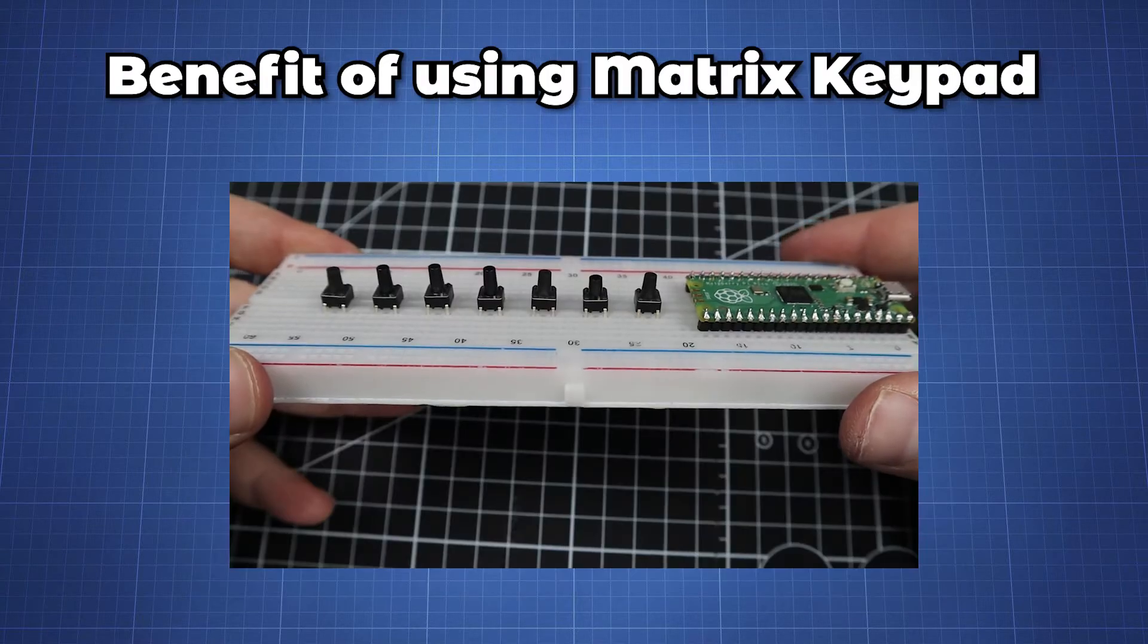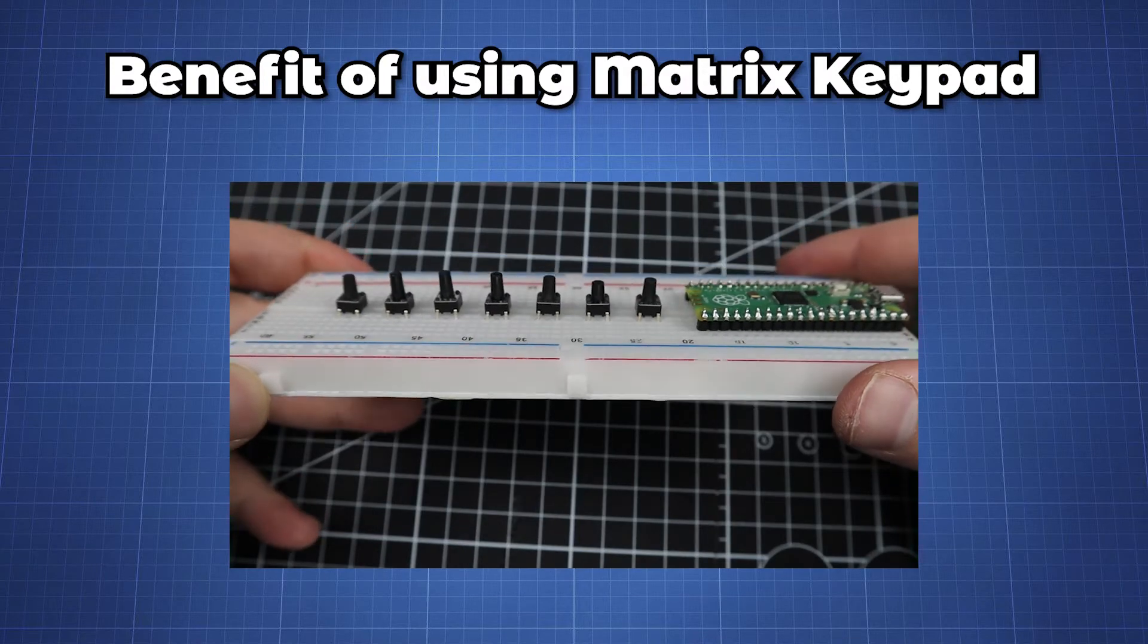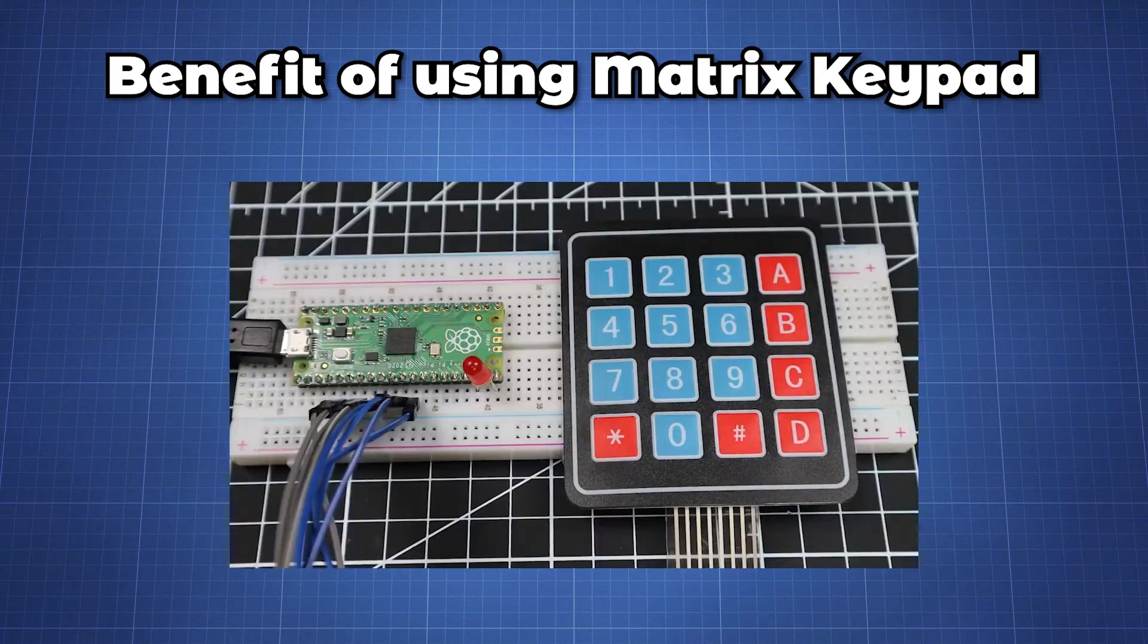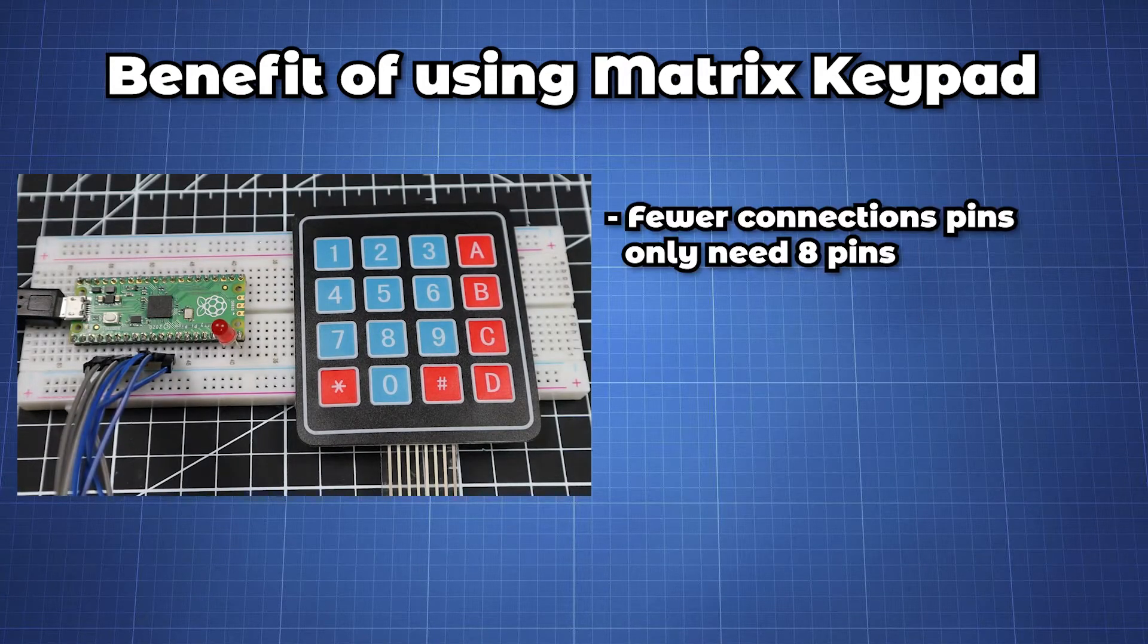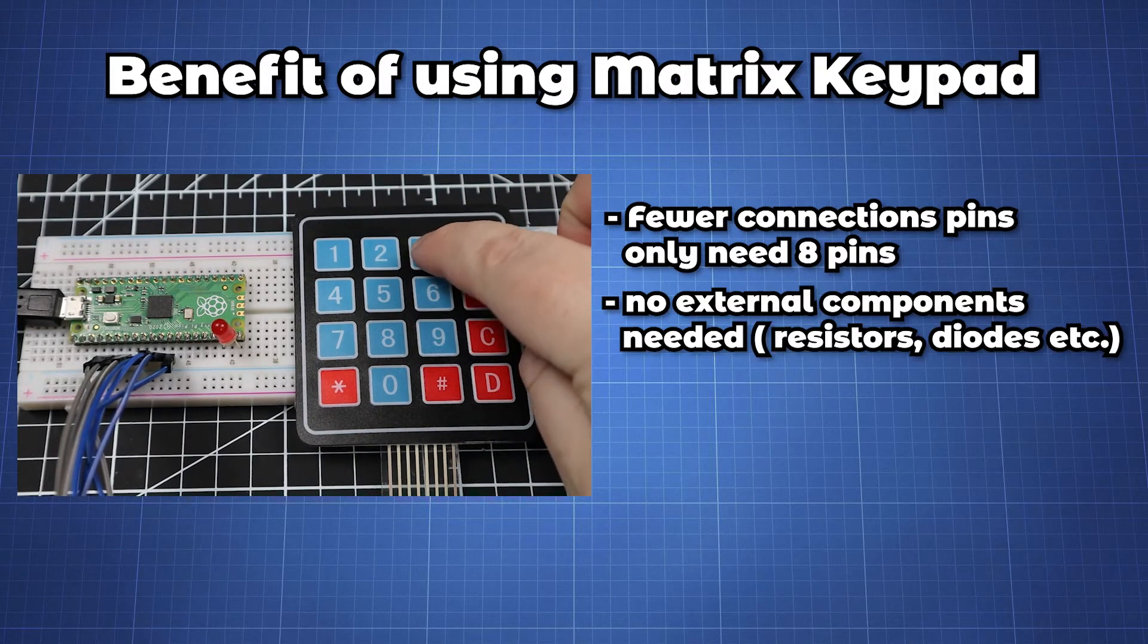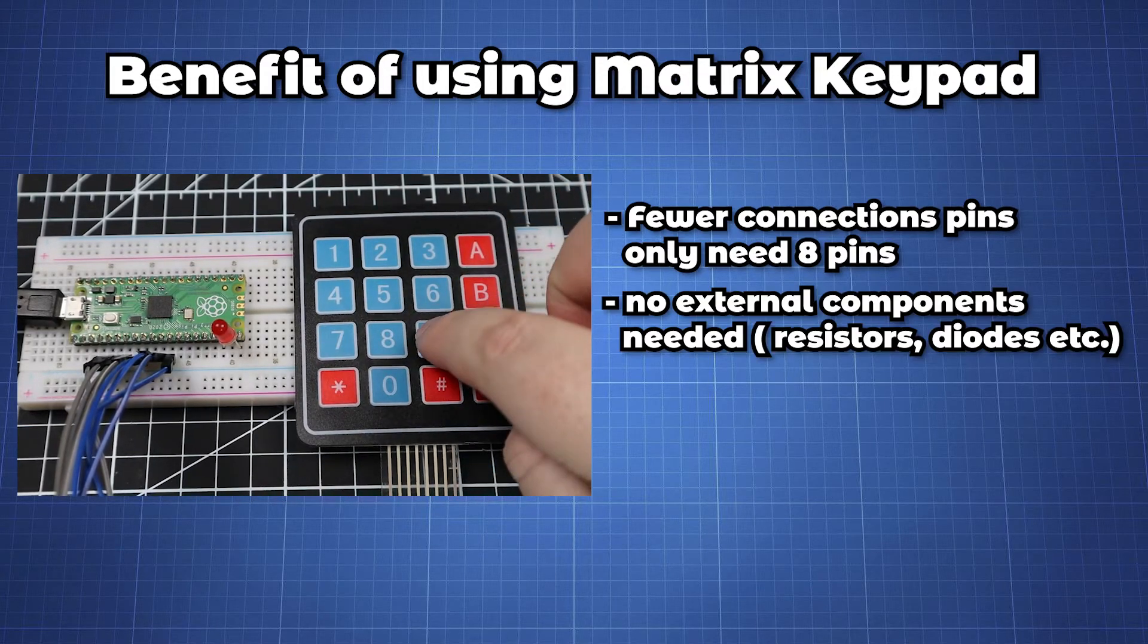Now we can wire up 10 or more push buttons to various input pins but it is much easier to use a matrix keypad like this one. The benefit of this is that you will need fewer pins and with some clever programming in MicroPython you do not need resistors for debouncing.